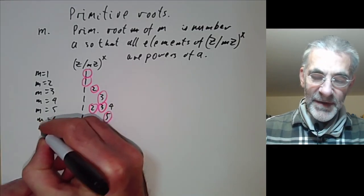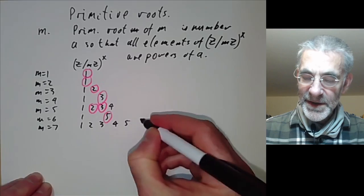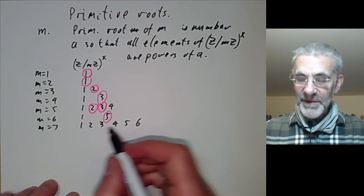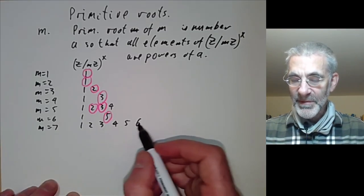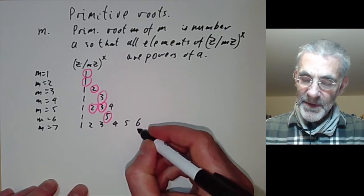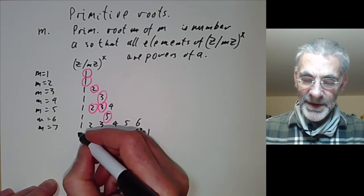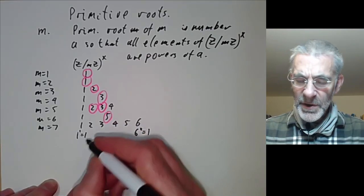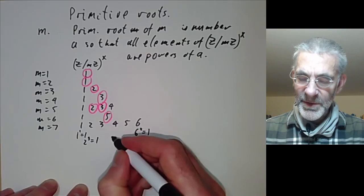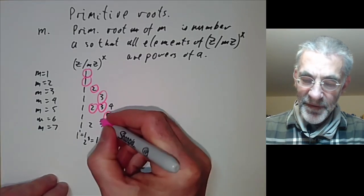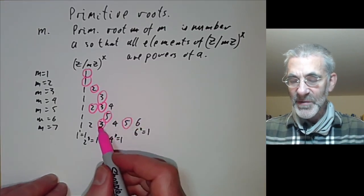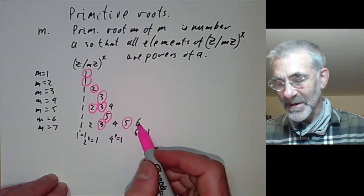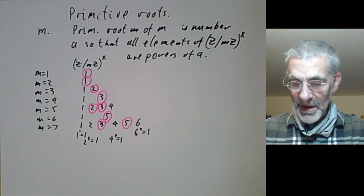For m equals 7 things get more complicated. There are six elements in this group and we want to find an element of order 6, so that all its powers give all six elements. 6 won't do because 6 squared equals 1. 1 won't do since its first power is 1. 2 won't do because 2 cubed equals 1, and similarly 4 cubed equals 1. However, 3 and 5 work: the powers of 3 give 1, 3, 2, 6, 4 — all the elements.